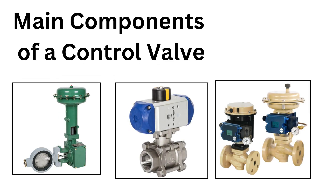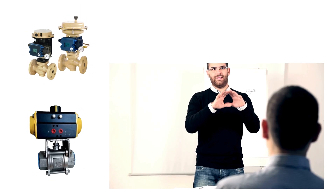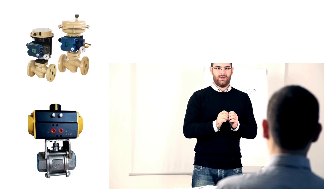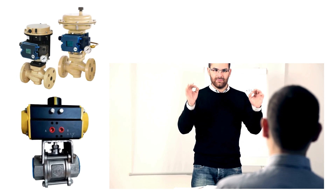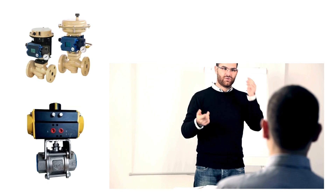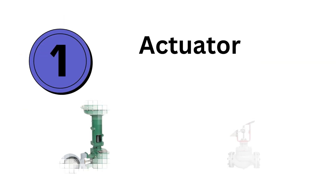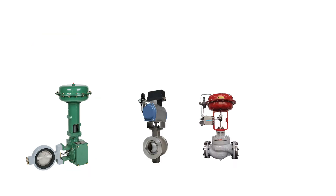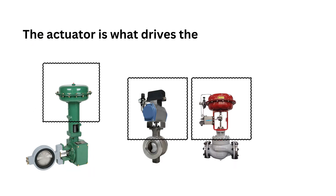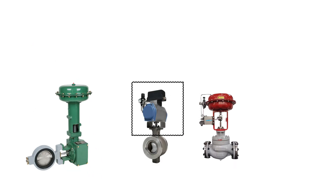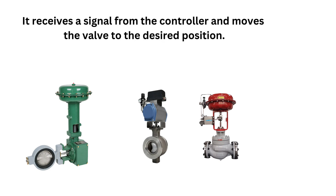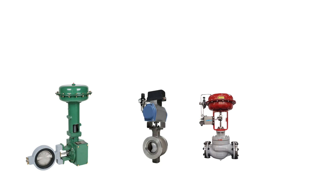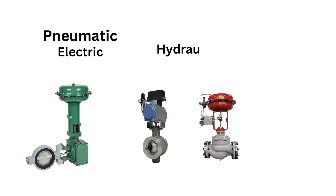Now let's discuss the main components of a control valve. We will break down the key components, as each part plays a critical role in how the valve functions. The first key component is the actuator. The actuator is what drives the valve — it receives a signal from the controller and moves the valve to the desired position. Actuators can be pneumatic, electric, or hydraulic.